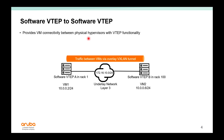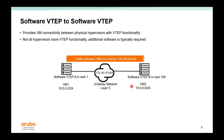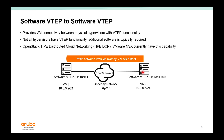In the software VTEP to software VTEP use case, we have hypervisors that are VXLAN-capable — they can build tunnels between themselves, providing VMs with connectivity through the overlay network. In this example, VMs are on the same /24 subnet with a Layer 3 network in the middle, and the VXLAN tunnel provides connectivity between VM1 and VM2. Note that not all hypervisors have VTEP functionality; additional software is typically required. Examples include OpenStack, HPE Distributed Cloud Networking, and VMware NSX.